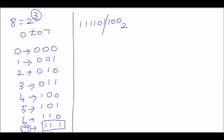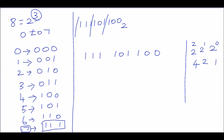Then group the next three digits: 101. Then the next three: 111. So the first group is 100, the second group is 101, and the third group is 111. In binary, the positional weights are 2⁰=1, 2¹=2, and 2²=4 — so the weights are 1, 2, 4 for each group.